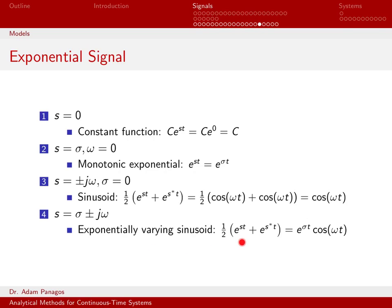If I was to add e to the st plus e to the s conjugate of t, I still get some cancellation, but I have this cosine oscillation and this damping factor on top of it.